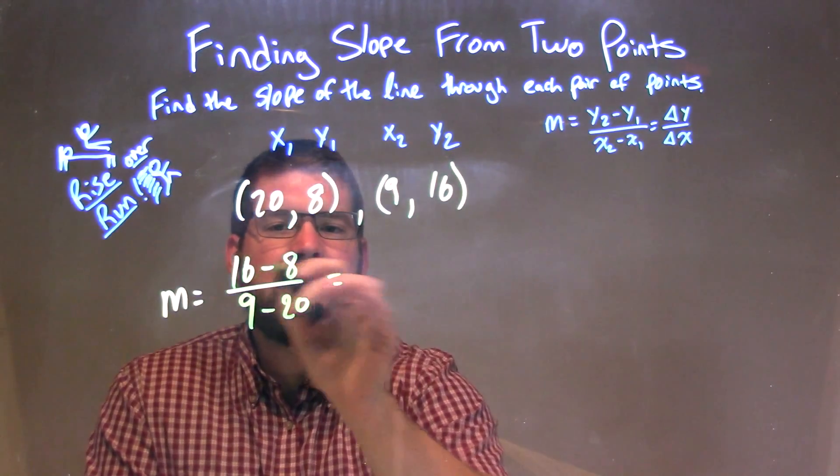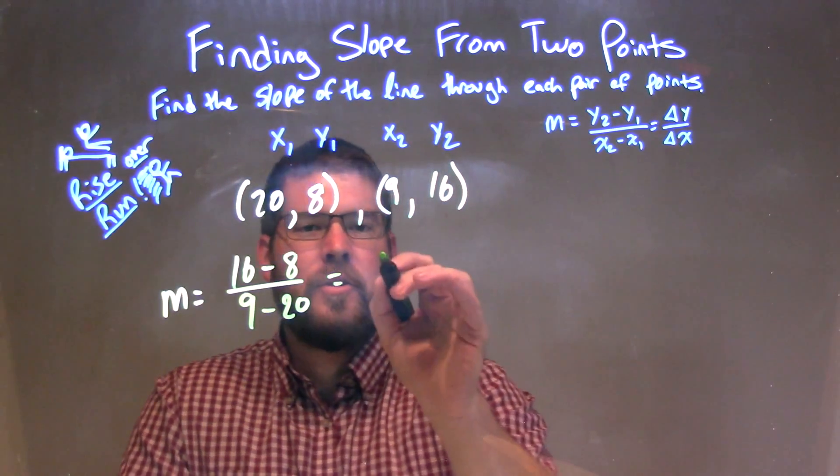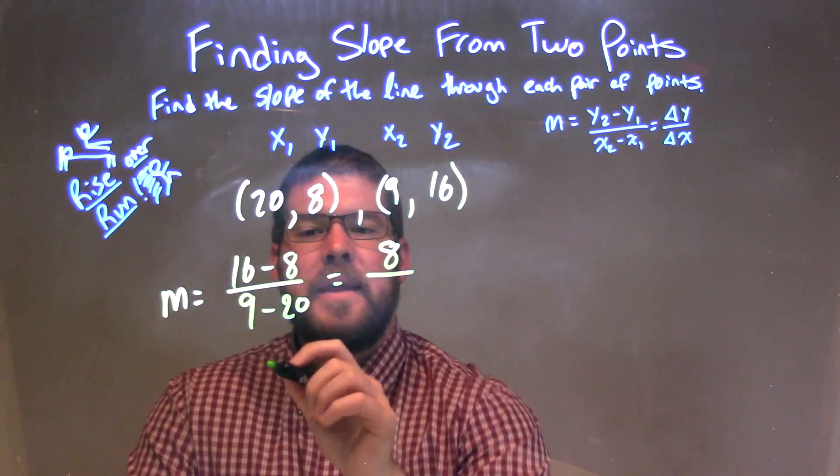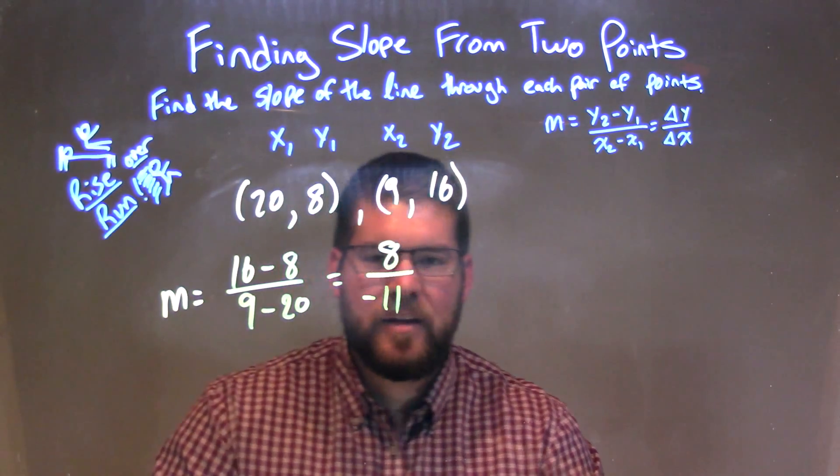Okay, so we have 16 minus 8, we can probably solve that right there. 16 minus 8 is a good old positive 8, but 9 minus 20 comes out to be a negative 11.